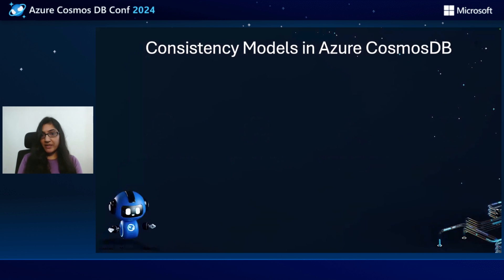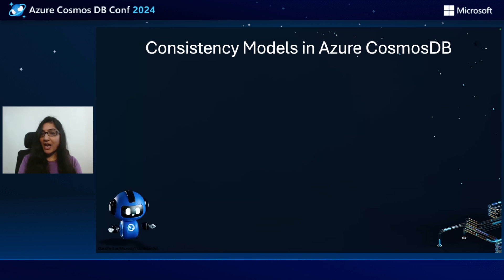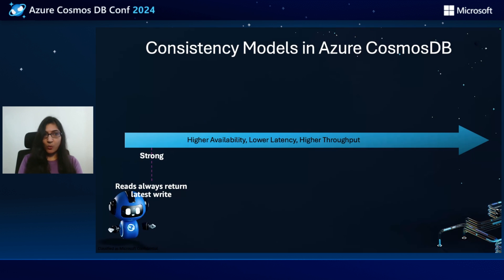Now, coming to consistency models in Azure Cosmos DB. One of the cool things about distributed database platforms is that they are no longer what they used to be a decade ago. Earlier, we just used to have two consistency levels — strong consistency and weak consistency. But Azure Cosmos DB has five consistency levels. The first is strong consistency, which means that if you have a write and you do a read, no matter where you are, you are going to get the last write — you lose nothing.